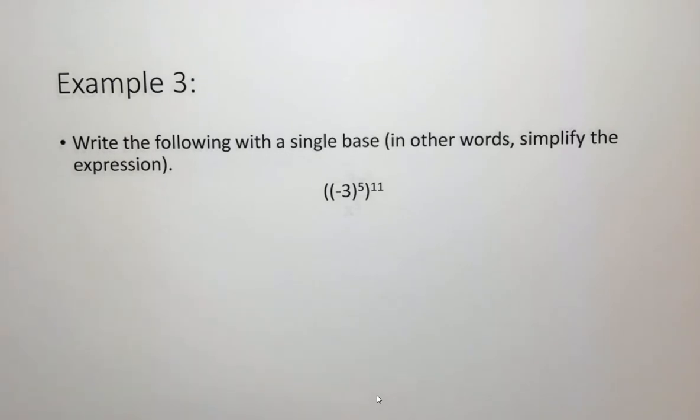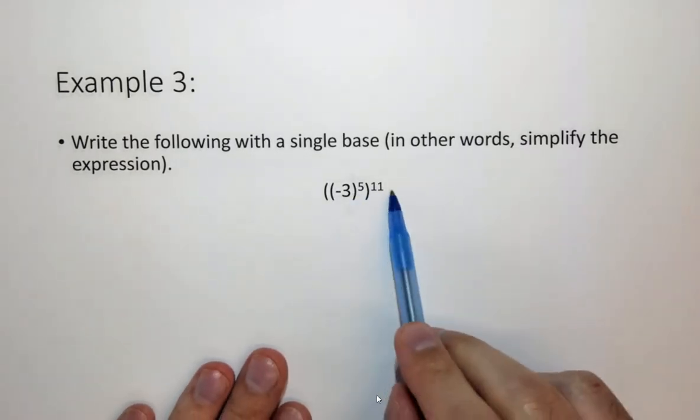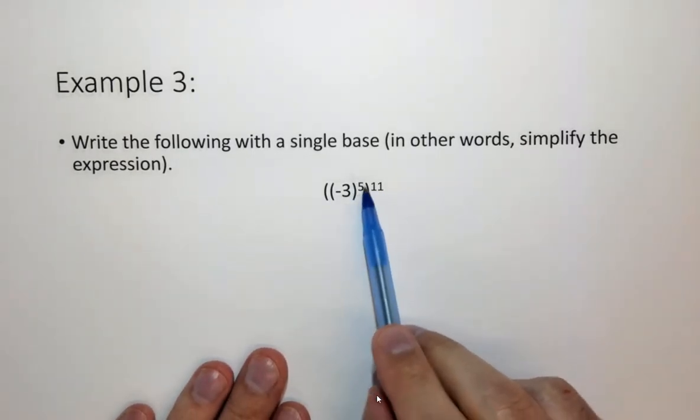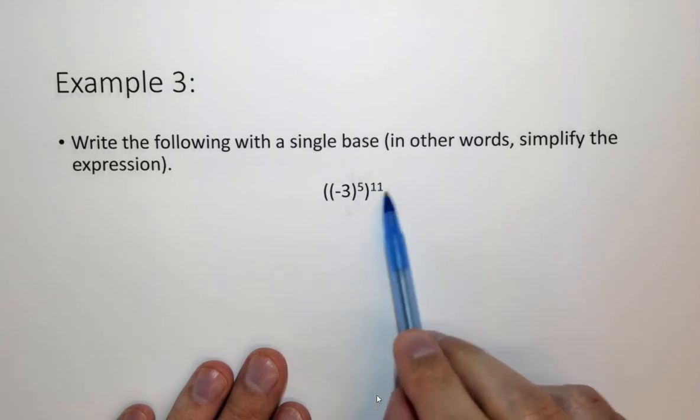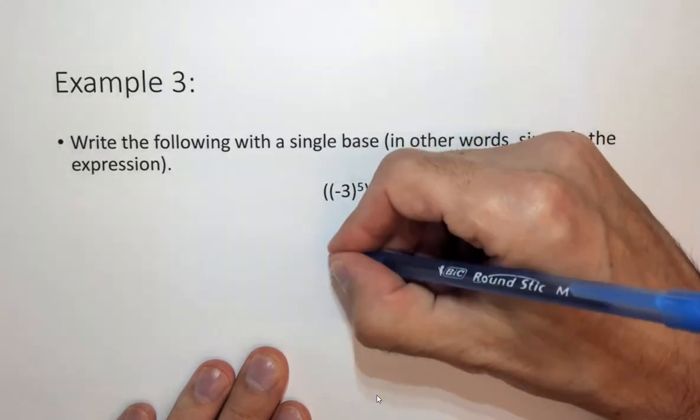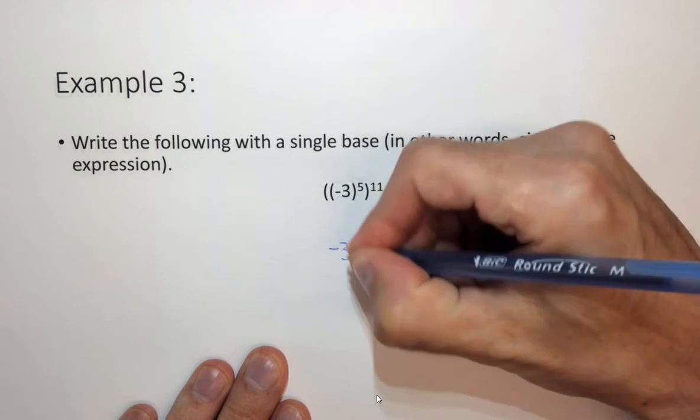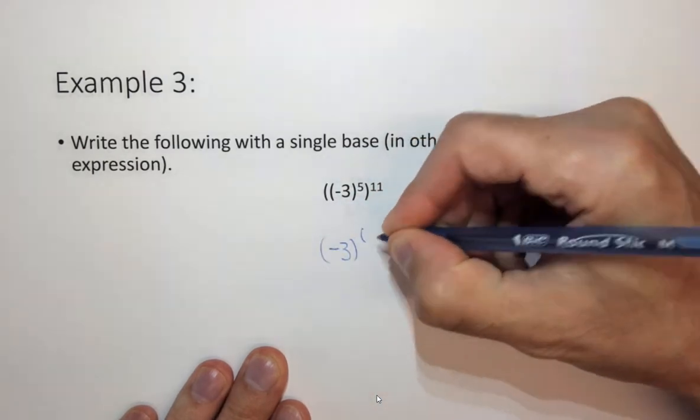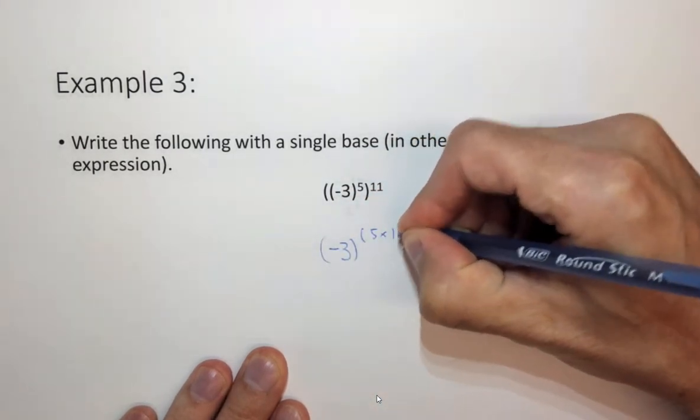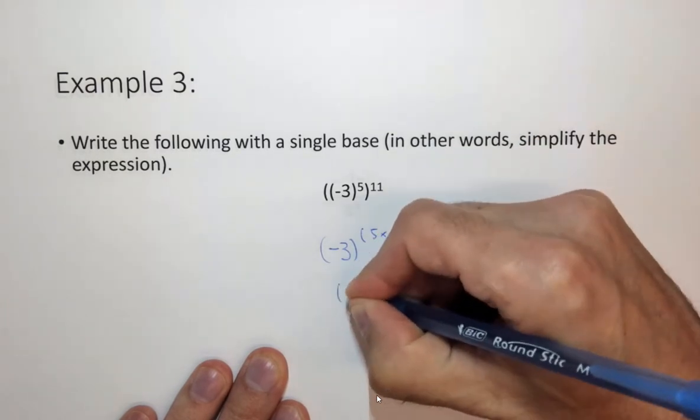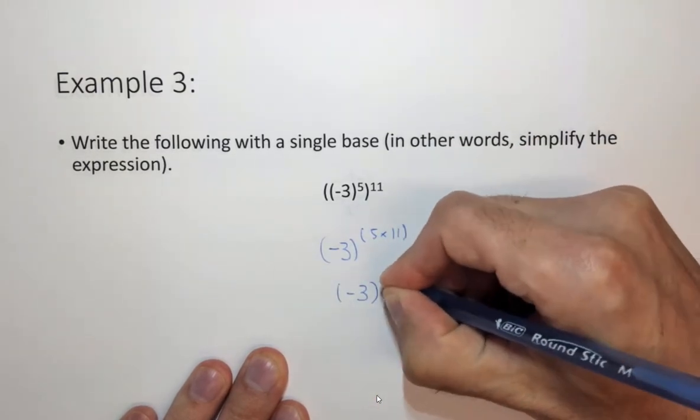Here we have a power raised to another power. So if you have one exponent raised to another exponent, you multiply. So this is equal to minus 3 to the 5 times 11 or minus 3 to the 55.